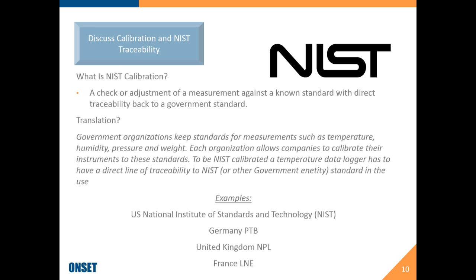These government laboratories keep standards and allow people in the industry to test their equipment to those standards to make sure they're accurate. I equate it to this: back in the day, a standard foot was the actual measurement of the king's foot. Nowadays there's a laboratory in the United States that NIST runs that can tell you exactly what one foot is from point A to point B. So you can always go back and check the length of your ruler to make sure it's actually one foot long. We can do the same with temperature — when we talk about NIST calibration, it's checking to make sure that your data logger is actually monitoring what is one degree Celsius.